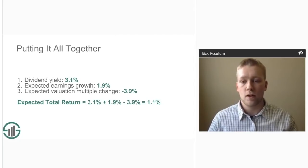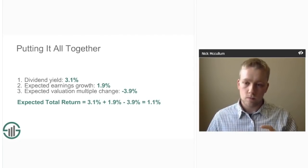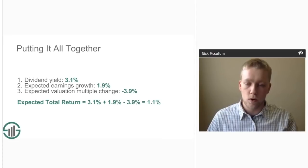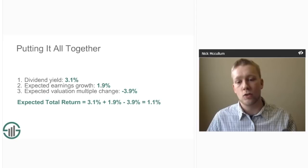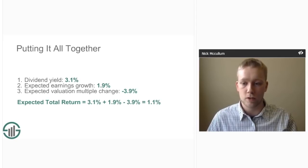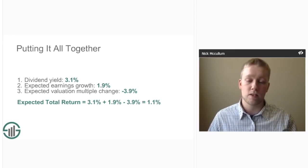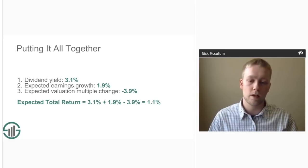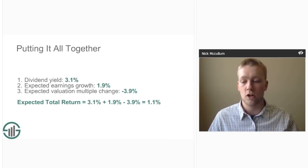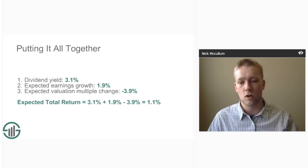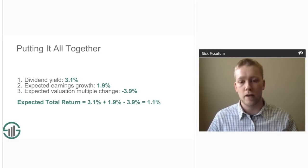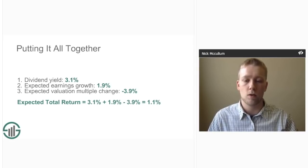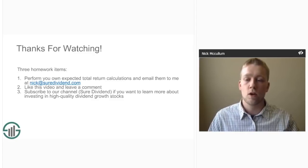Putting these three components together: Coca-Cola's dividend yield is 3.1%, its expected earnings growth is 1.9%, and its expected change to its valuation multiple is negative 3.9%. Adding these together gives an expected total return of 1.1%, which is quite poor for a large publicly traded stock like Coca-Cola. Accordingly, we would not rate this company as a buy right now, although due to its strong brand it would probably be a buy if its valuation multiple contracted to below its long-term average.